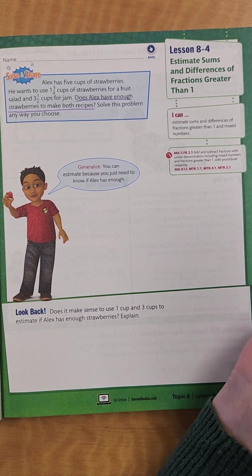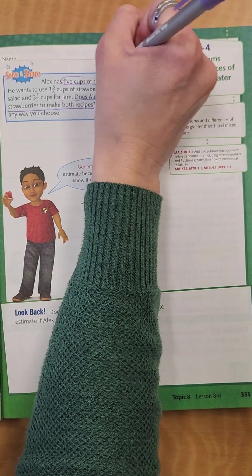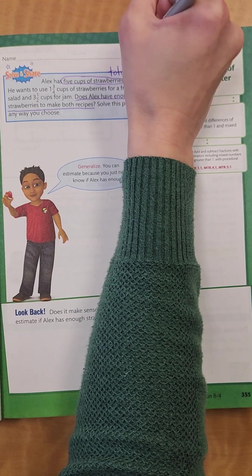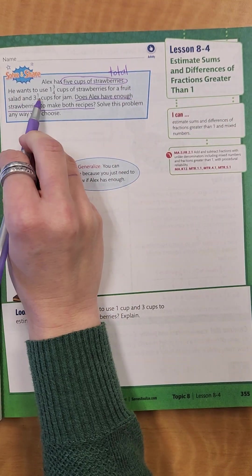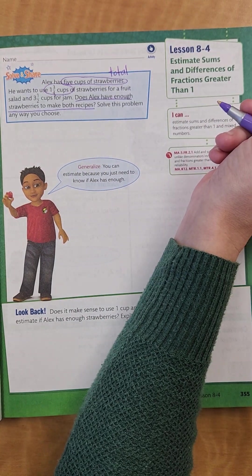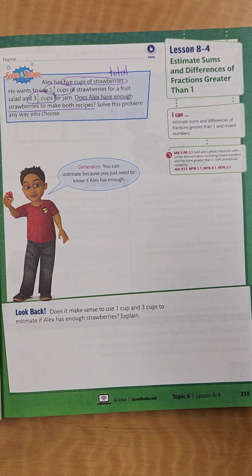So let's look at the information that they're giving us. They're telling us that he has a total of 5 cups of strawberries. I'm going to circle that and I'm going to write our total. Then he wants to use 1 and 3 fourths cups of strawberries for a fruit salad and 3 and one half cups for jam.